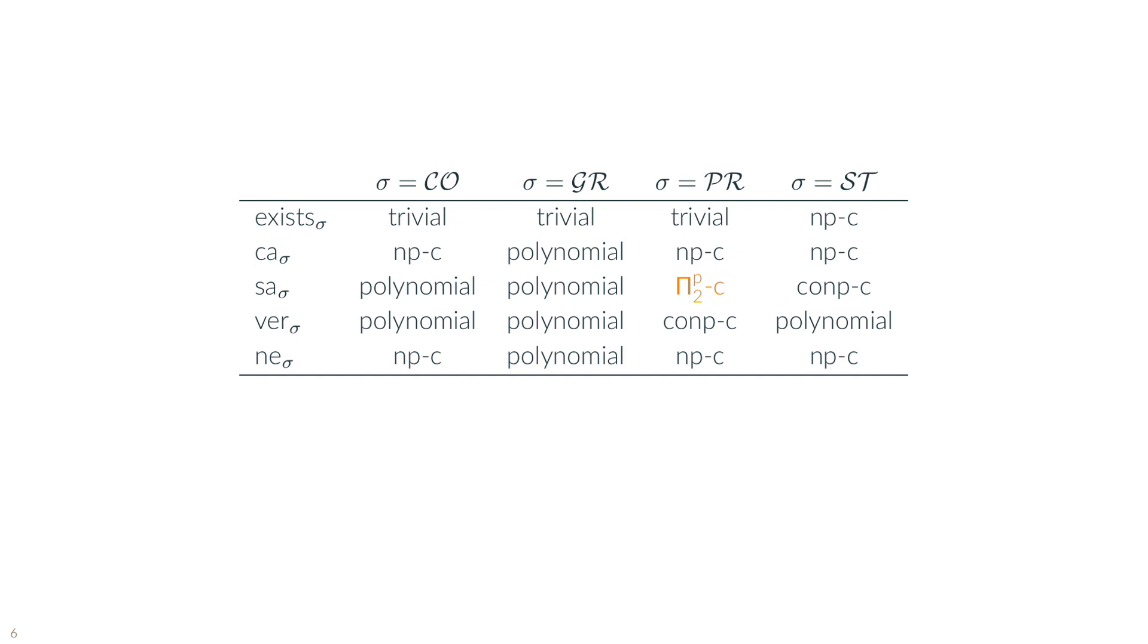Associated to each semantic, there is a number of decision problems, from determining whether a semantic gives rise to at least one extension, to identifying whether an argument belongs to one or all of the semantic extensions, problems that take the name of credulous and skeptical acceptance. As we can see from the slide, for the case of preferred semantics, the skeptical acceptance lies at the second level of the polynomial hierarchy.